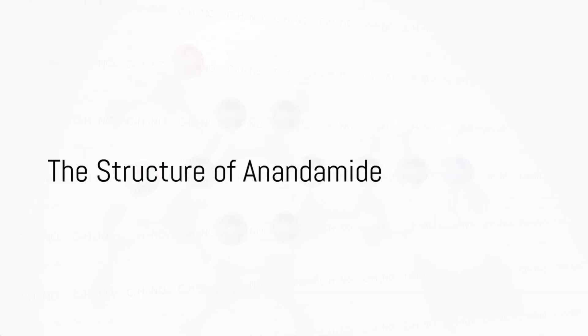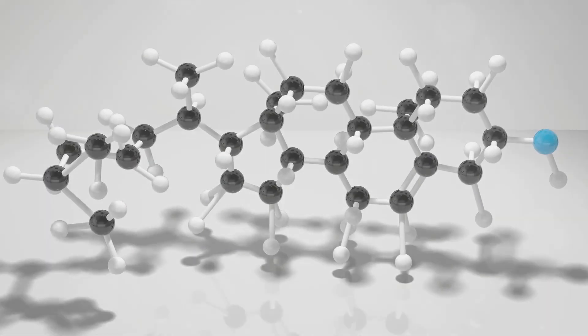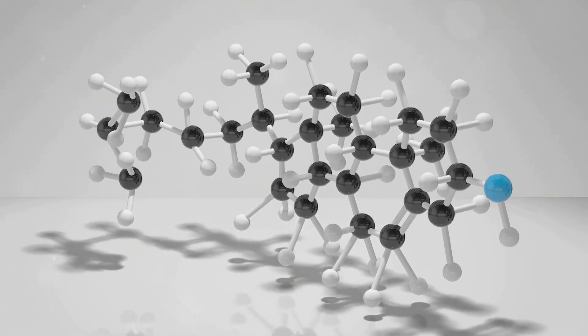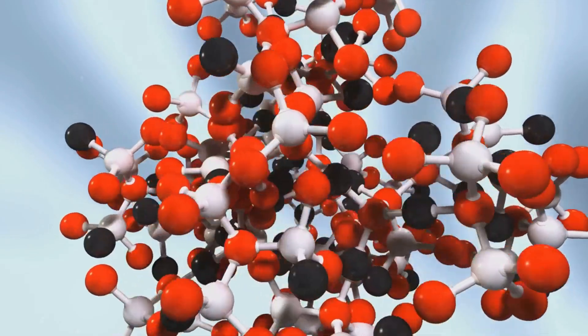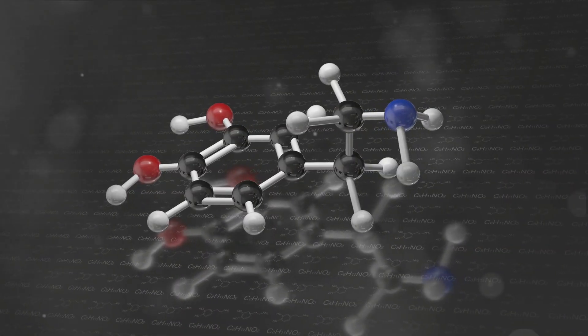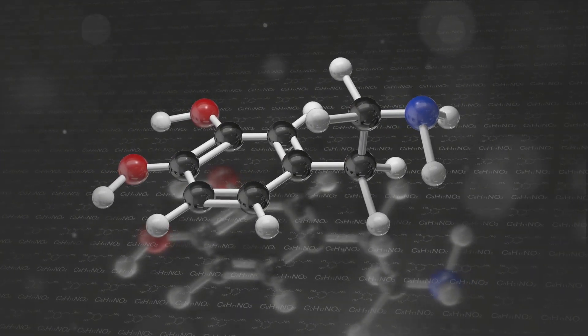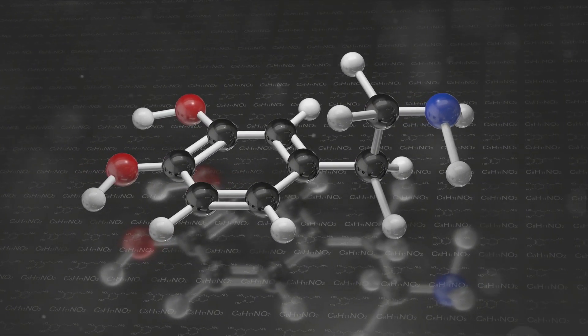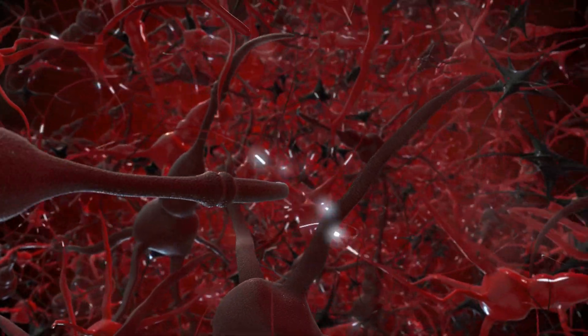Anandamide is a unique molecule, structurally speaking. It's a fatty acid neurotransmitter derived from the non-oxidative metabolism of arachidonic acid, an essential omega-6 fatty acid. This unique structure allows anandamide to bind with cannabinoid receptors in our brain and body, setting the stage for its various functions.